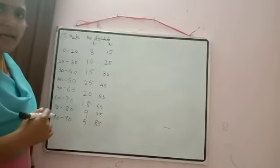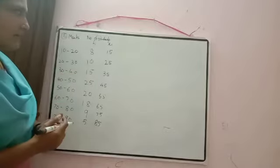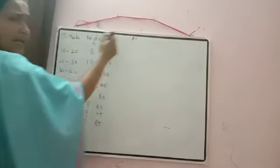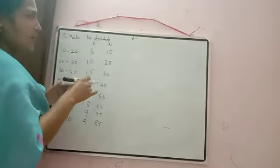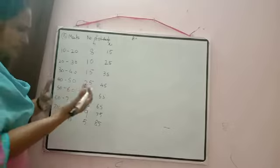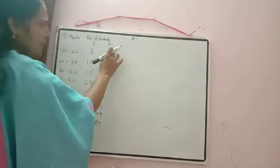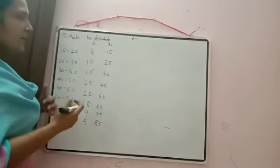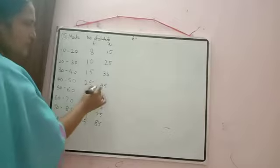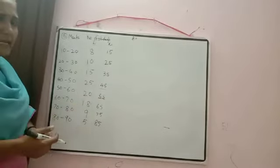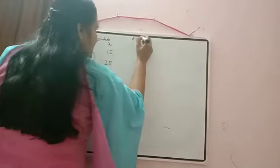We use the step deviation method. In that, we take A as the assumed mean — a middle value from our observations. There are 8 observations (class marks), so two middle values. I will take A = 45. Next column: dᵢ = xᵢ − A. Computing: 15−45=−30, 25−45=−20, 35−45=−10, 45−45=0, 55−45=10, 65−45=20, 75−45=30, 85−45=40.